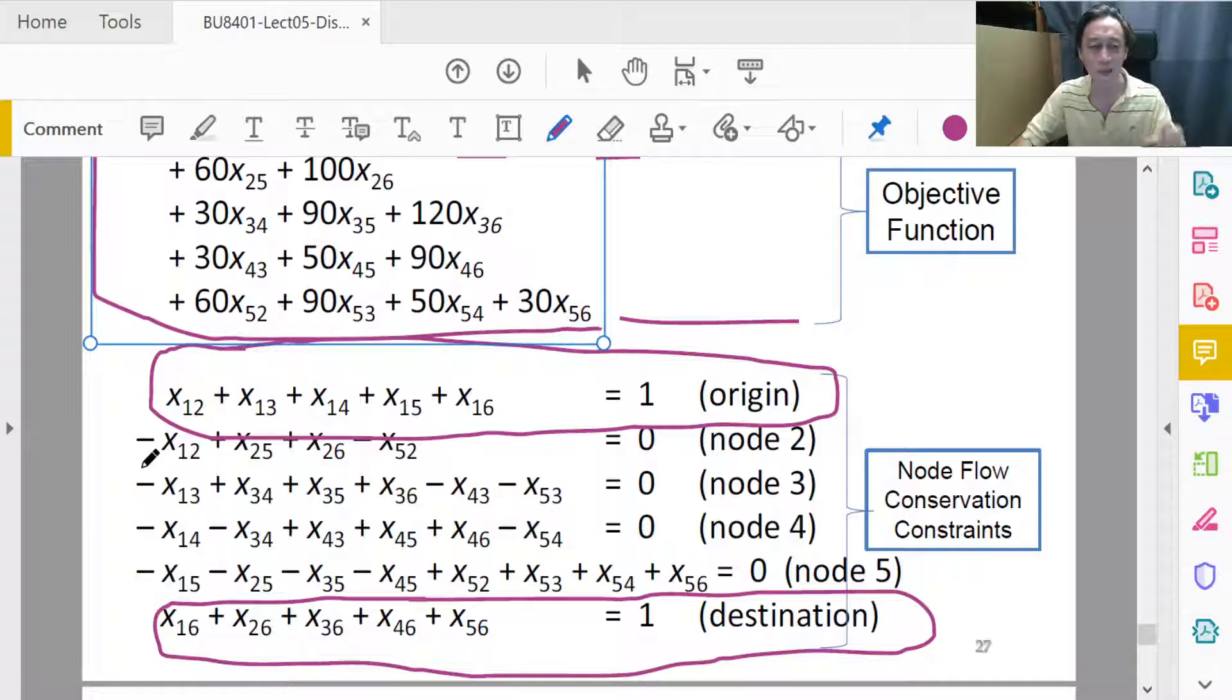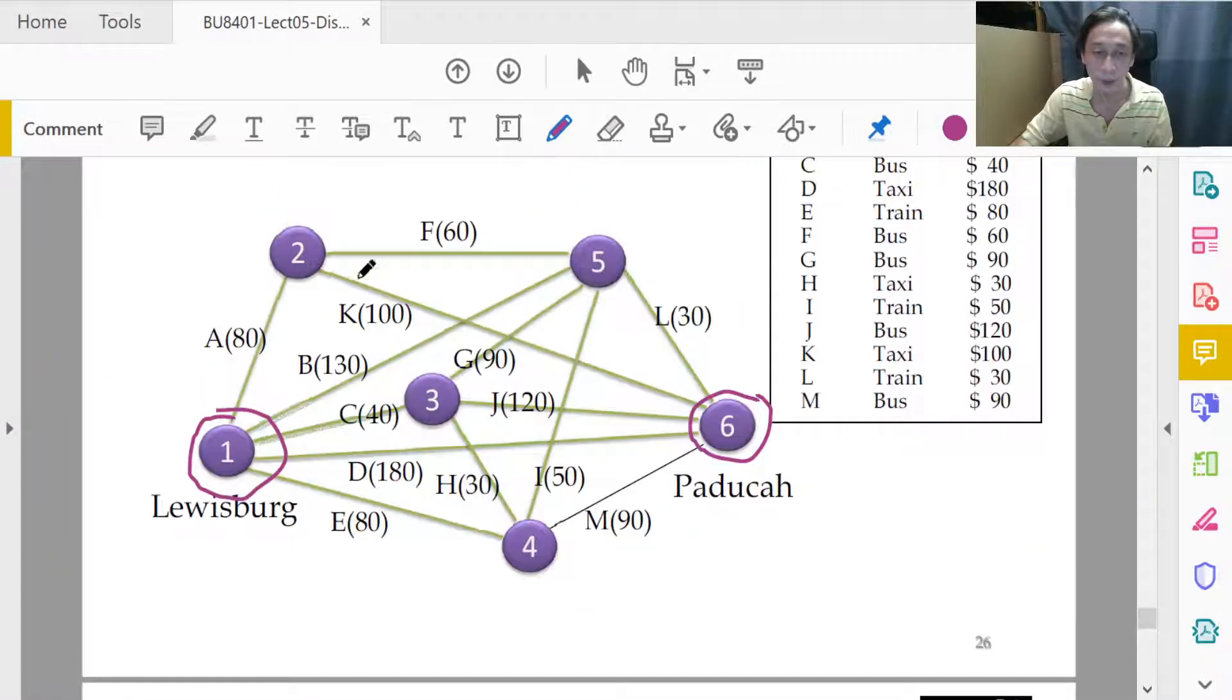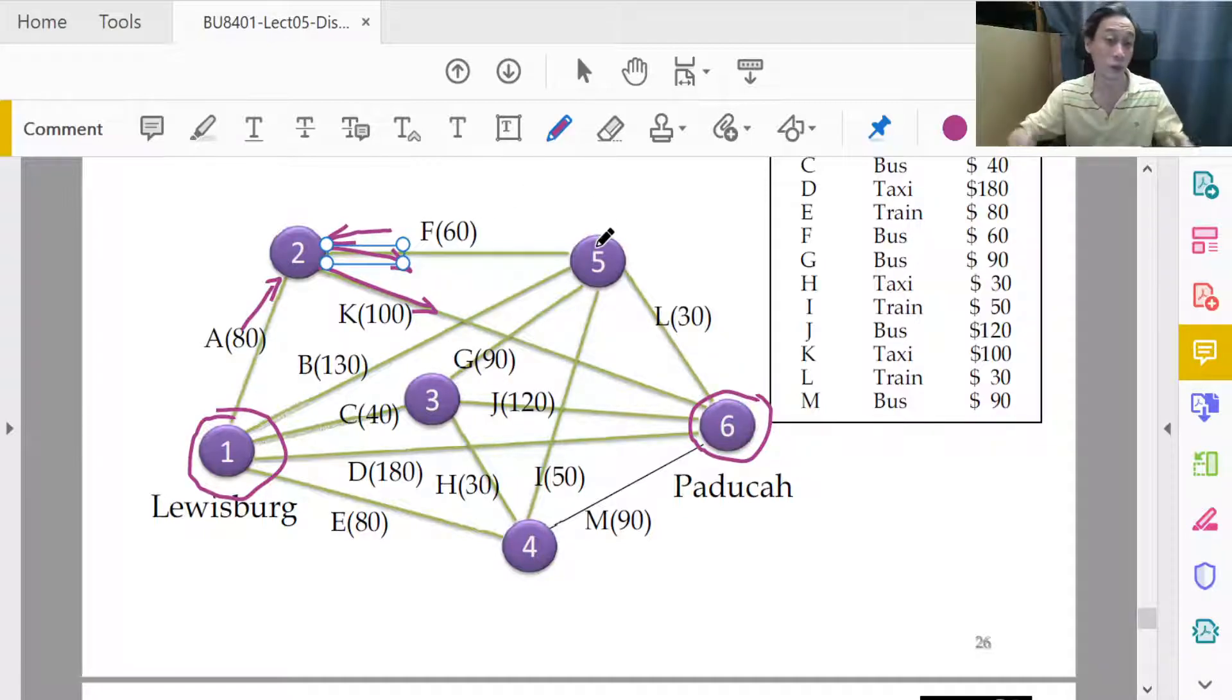Now you see a bunch of negative signs here, and they are very hard to understand. I suggest you bring the negative signs across the equal sign. For example, for node 2, x25 plus x26 equals x12 plus x52. Let's look at the diagram. 2 to 5, 2 to 6, those sound like outgoing, so add together, equals 12 plus 52. Those seem like incoming. Total in equals to total out, that's for node 2.